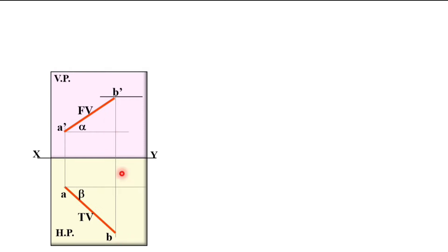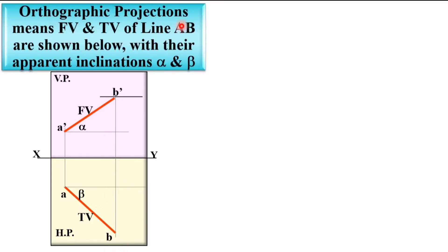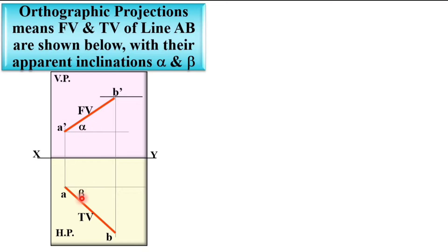This is the earlier figure we have already discussed. Orthographic projections means you have to draw the front view and top view of line AB. Here a'b' is the front view and ab is the top view, with their apparent inclinations alpha and beta. The front view makes the angle alpha with the XY line — called the apparent angle — and the top view makes the angle beta with the XY line, also called the apparent angle.